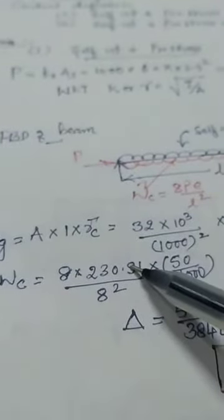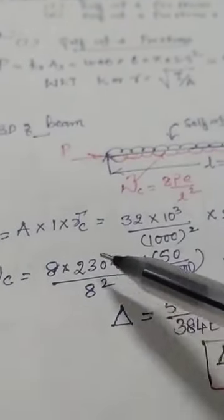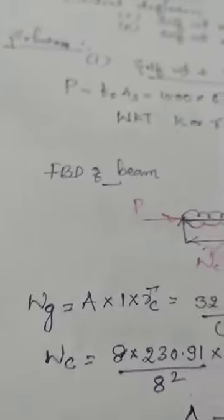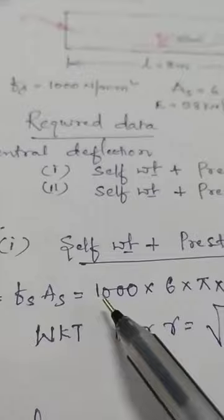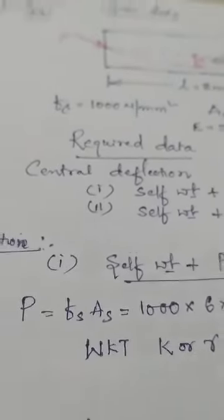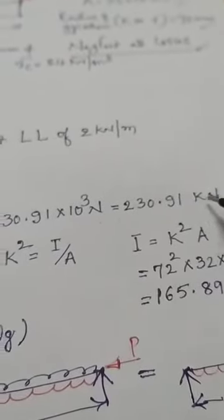The equivalent upward UDL due to the cable profile is Wc = 8Pe/L². Here P is calculated as fs × As (area of steel), converting from Newtons to kilo-Newtons.